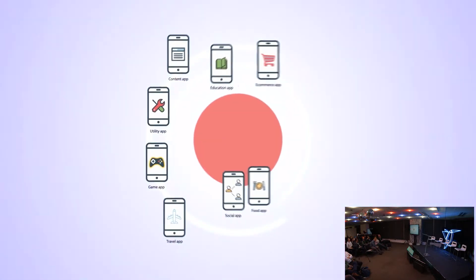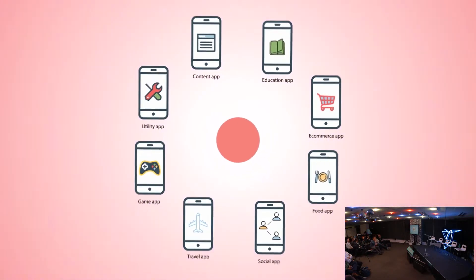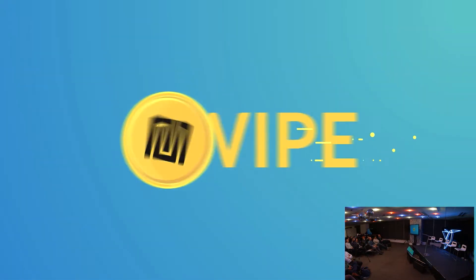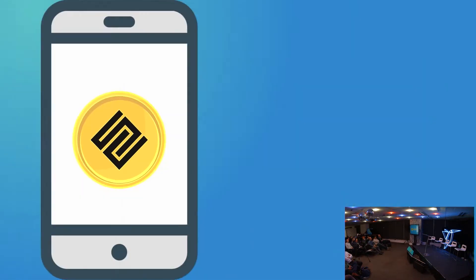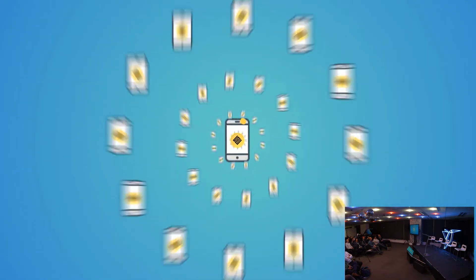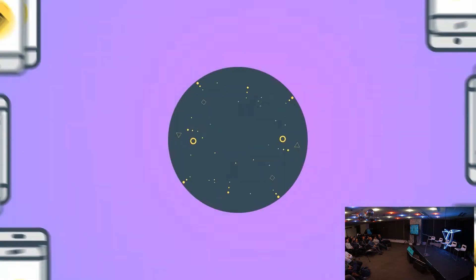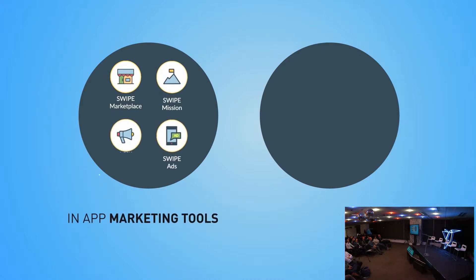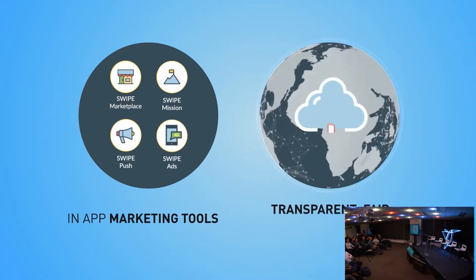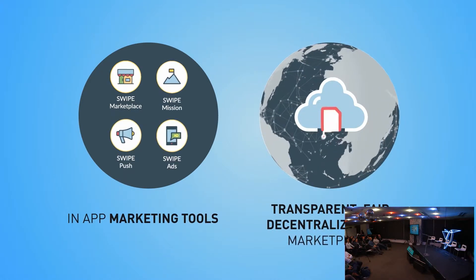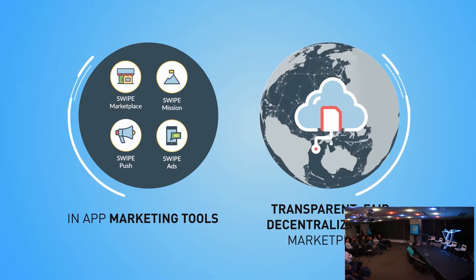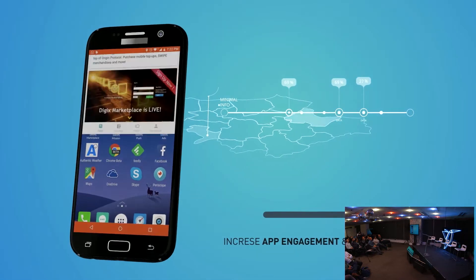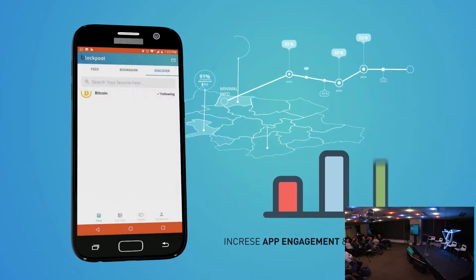How can we give the power back to these stakeholders through a transparent and auditable system? Introducing Swype — a decentralized mobile engagement data platform on the blockchain. Swype empowers app developers with a suite of in-app tools and a transparent and fair way to monetize data through our decentralized data marketplace.